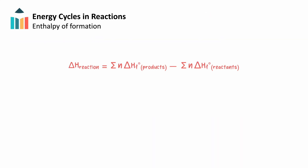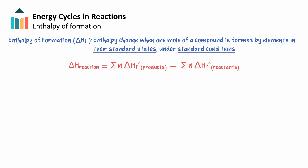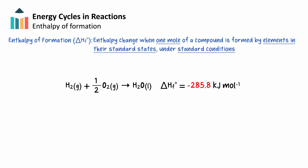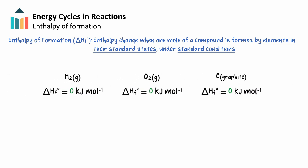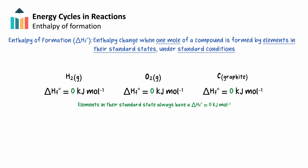Instead of using bond enthalpies, we can reference the individual enthalpy of formation values for each of our reactants and products, and complete a more precise calculation for a reaction's change in enthalpy. Enthalpy of formation represents the enthalpy change when one mole of a compound is formed from elements in their standard states under standard conditions. This standardization ensures consistency and easy comparison across reactions. For example, the formation of water from oxygen and hydrogen gas has an enthalpy of formation equal to negative 285.8 kJ per mole, and the formation of methane from carbon graphite and hydrogen gas has an enthalpy of formation of negative 74.8 kJ per mole. Elements in their standard states, like H2, O2, or carbon graphite, have an enthalpy of formation of 0 kJ per mole, because they are already in their most stable natural form, so no energy is needed to form them.